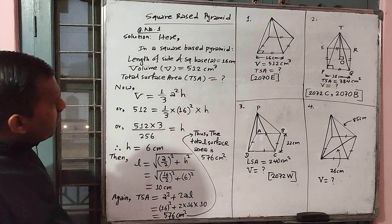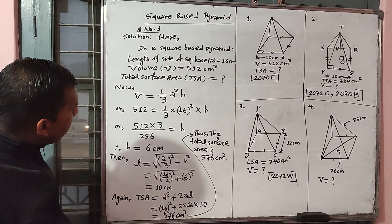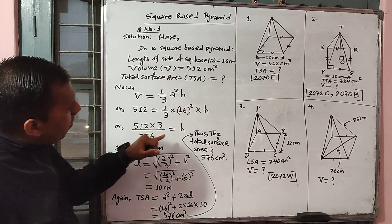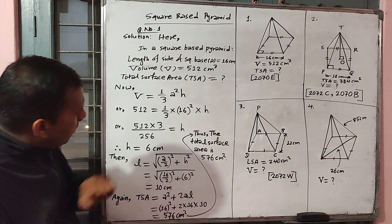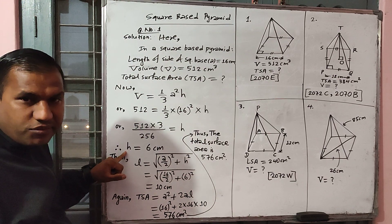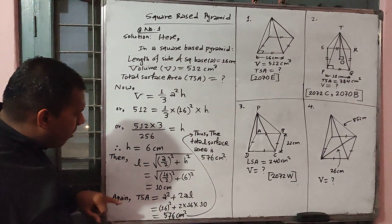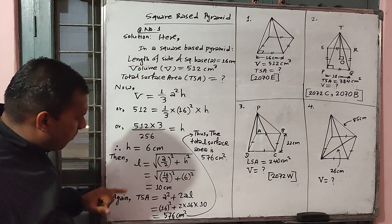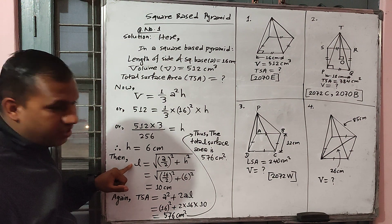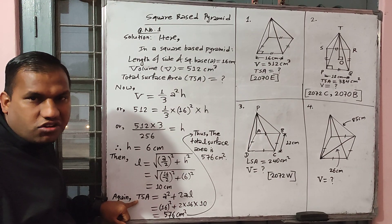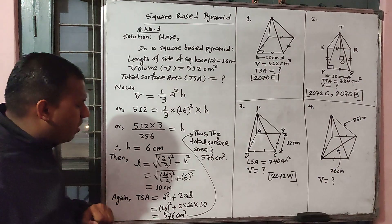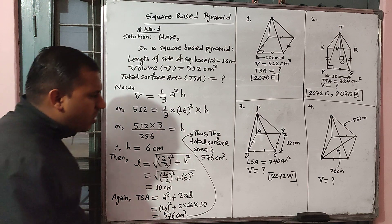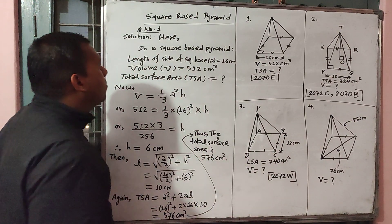Ok students, first of all by using the volume formula we can get the vertical height, then after getting vertical height we can find the slant height of the pyramid, and after finding slant height we can get the total surface area. Now let's go to question number 2.